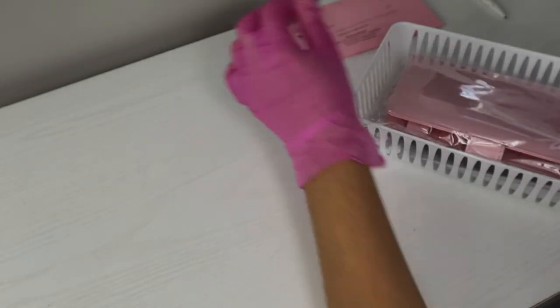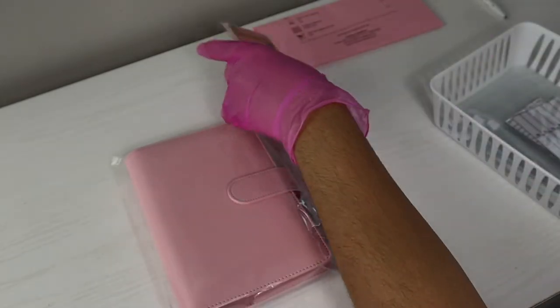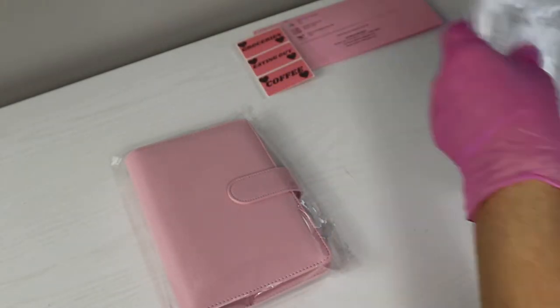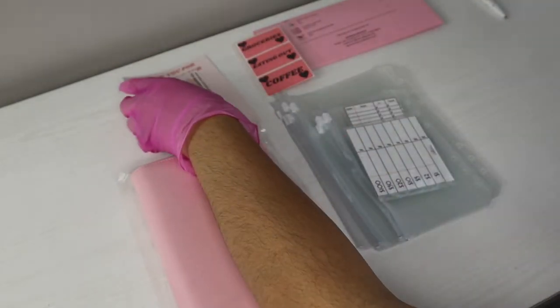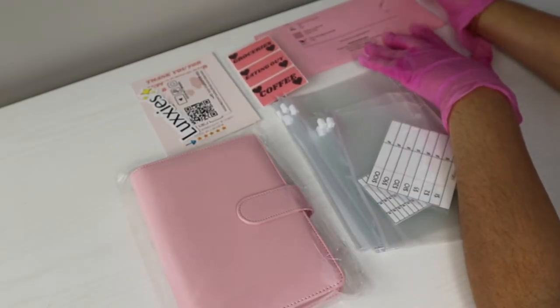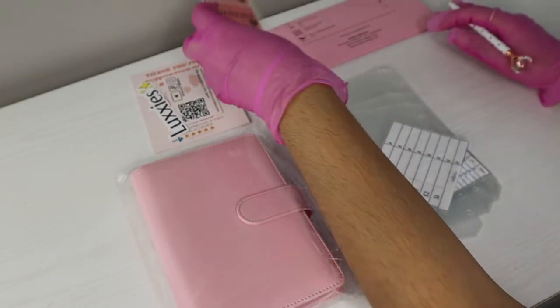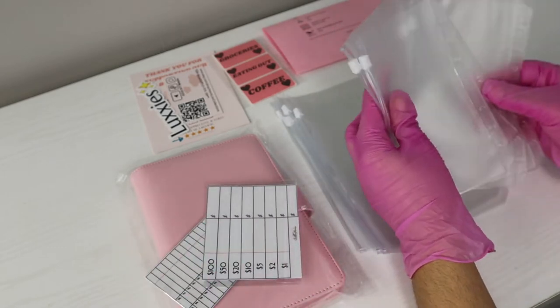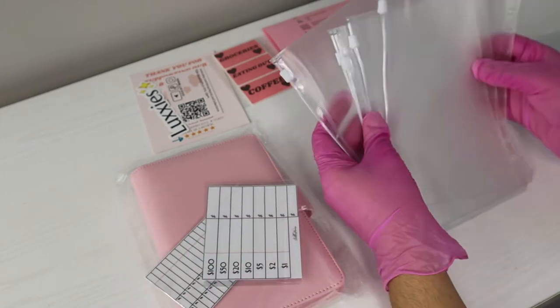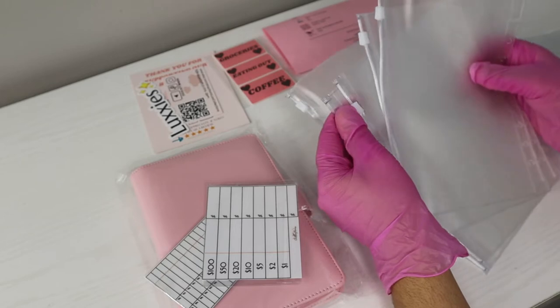This next order is for Carrie Ann. So we got the heart labels in pink. The startup budgeting bundle which brings the four envelopes and then five A5 envelopes which are right here.